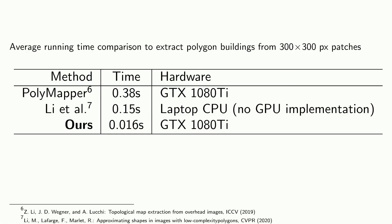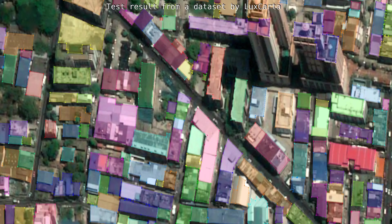Our building extraction framework is very fast compared to other methods, because we use a neural network to predict additional shape information at almost no extra cost, which is then used by our local and thus easily parallelizable vectorization algorithm to remove ambiguities.